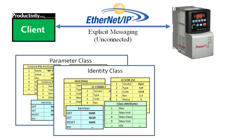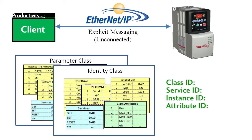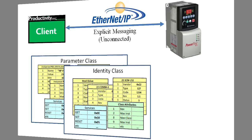You as a programmer just issue a command to get from the Identity class the revision of the host drive. We'll see how to get those specific numbers in the examples in the next video, but given these numbers, you just issue an explicit message command and EtherNet/IP messaging retrieves the revision of the hardware for you.